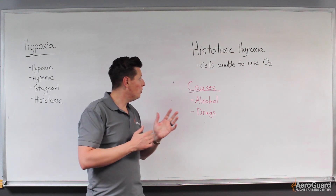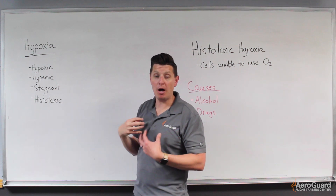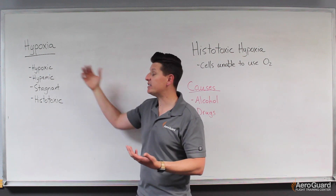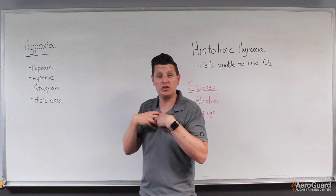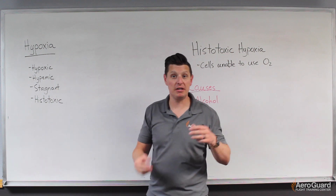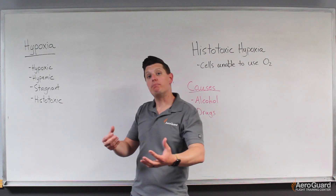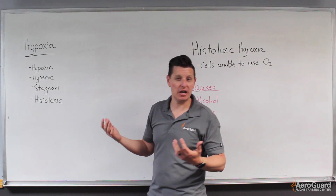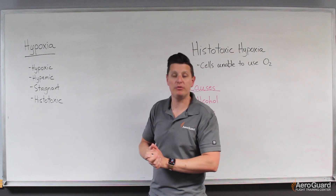Quick recap: hypoxic hypoxia means we don't get enough oxygen into our bodies — either unable to breathe enough or not enough oxygen available. Hypemic hypoxia means enough oxygen comes in but can't get into the bloodstream. Stagnant hypoxia means the blood can collect oxygen but can't transport it to the cells. Histotoxic hypoxia is when oxygen-rich blood reaches the cells but the cells are unable to collect it.